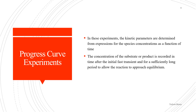Progress curve experiments. In these experiments, the kinetic parameters are determined from expressions for the species concentration as a function of time. The concentration of the substrate or product is recorded over time after the initial fast transient and for a sufficiently long period to allow the reaction to approach equilibrium. These experiments are less common now, but were widely used in the early period of enzyme kinetics.